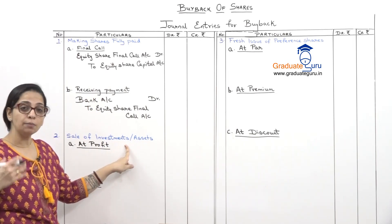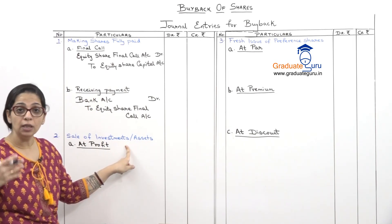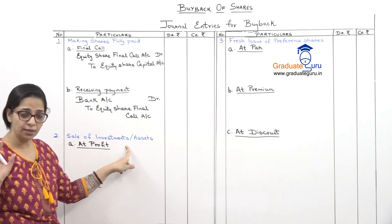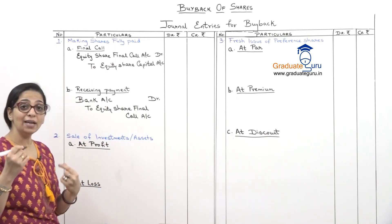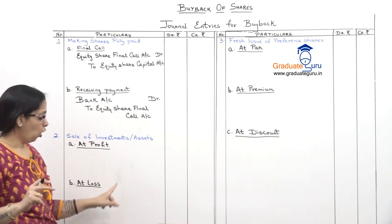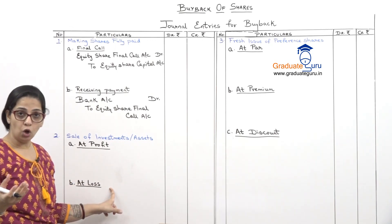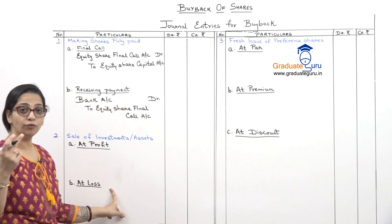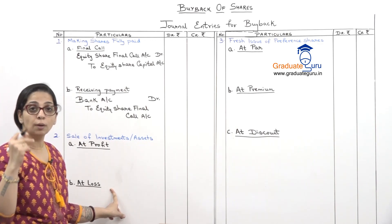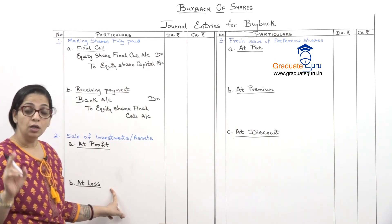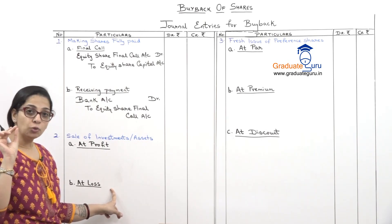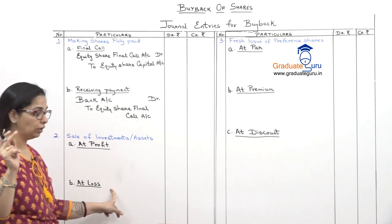Next, as I said, sometimes we will sell some investments or some assets — a normal entry for sale of asset. Obviously when you sell an asset, you get money. Now either the asset will be sold at a profit or it will be sold at a loss. It is important to note whether it is a profit or a loss, so you have to be careful.